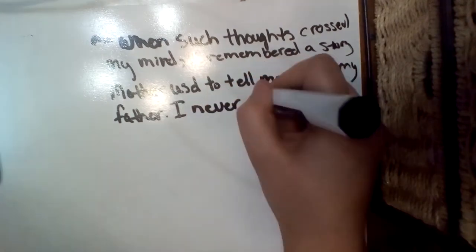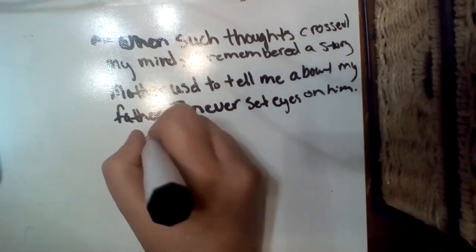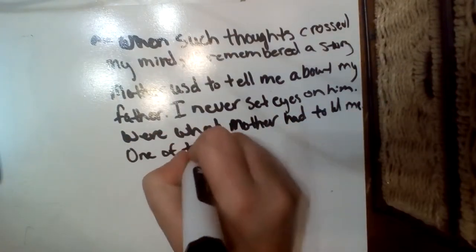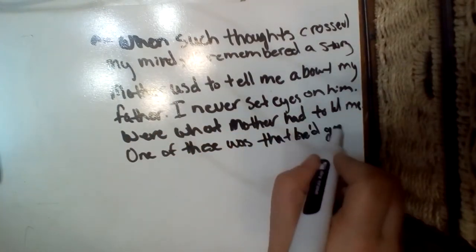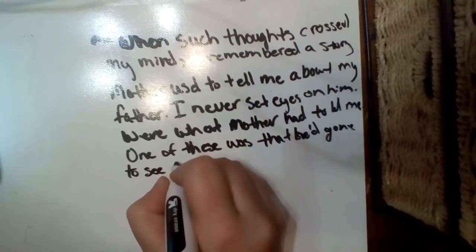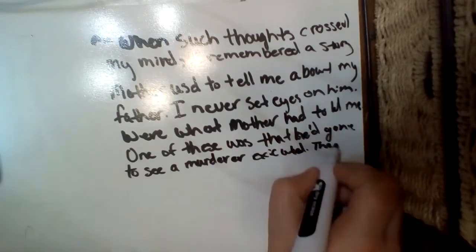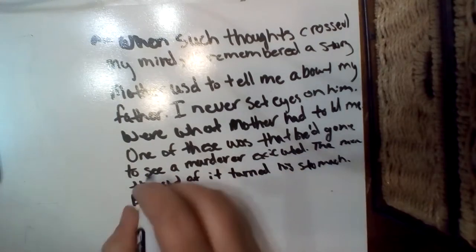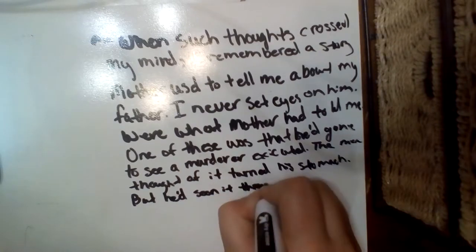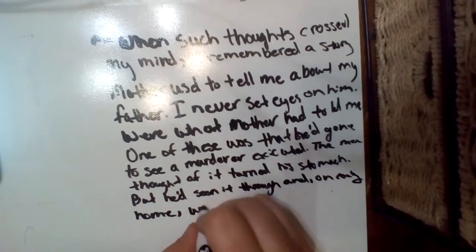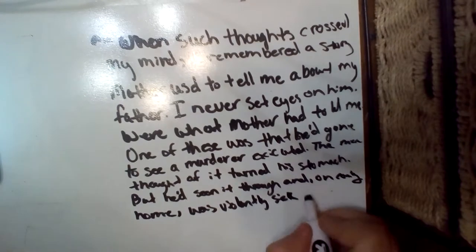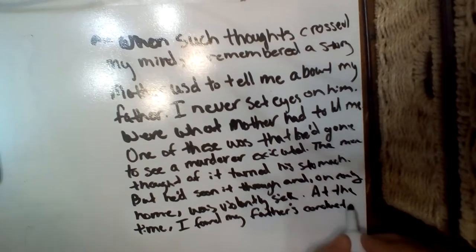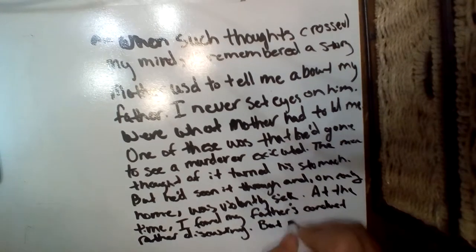Camus writes, When such thoughts crossed my mind, I remembered a story my mother used to tell me about my father. I never set eyes on him. Perhaps the only things I really knew about him were what mother had told me. One of these was that he'd gone to see a murderer executed. The mere thought of it turned his stomach. But he'd seen it through, and on coming home, was violently sick. At this time, I found my father's conduct rather disgusting. But now I understood. It was so natural. How had I failed to recognize that nothing was more important than an execution?